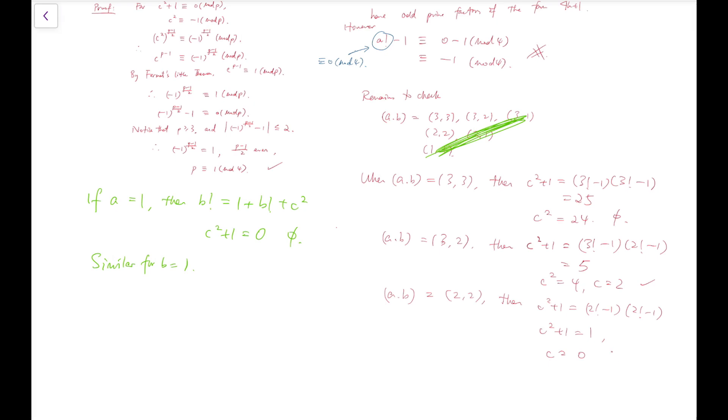So therefore, we only have two sets of solutions, which is (3, 2, 2), and of course we can reverse the permutation: (2, 3, 2). And that's it.